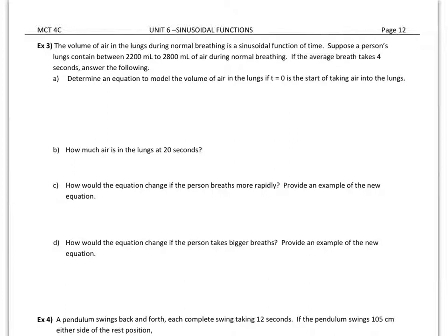Alright, so based on that, the midpoint would give us the axis of the curve. If I add 2200 plus 2800 and divide by 2, we're going to get 2500 for our axis of the curve. The difference between 2800 and 2500 is 300, so that's our amplitude.